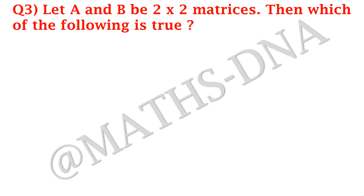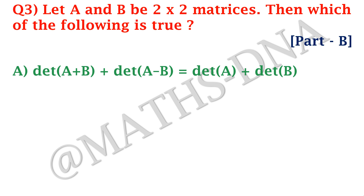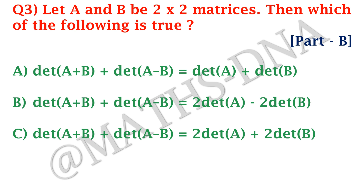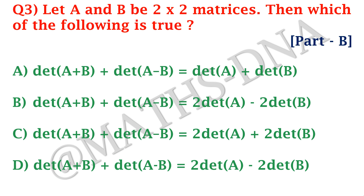Moving on, the third question: let A and B be two 2×2 matrices. Which of the following is true? Option A: det(A+B) + det(A−B) = det(A) + det(B). Option B: det(A+B) + det(A−B) = 2·det(A) − 2·det(B). Option C: det(A+B) + det(A−B) = 2·det(A) + 2·det(B). Option D: det(A+B) + det(A−B) = 2·det(A) − 2·det(B).